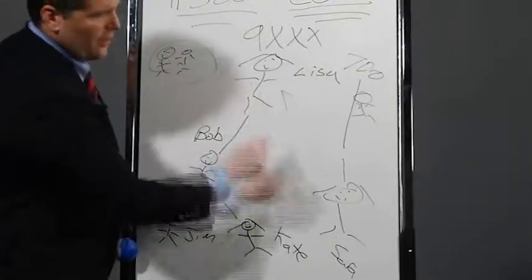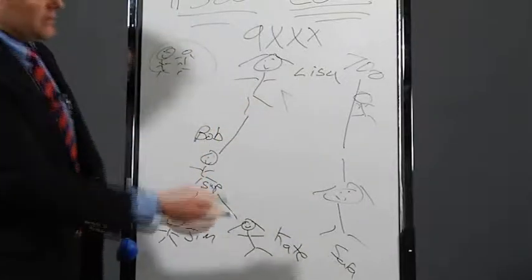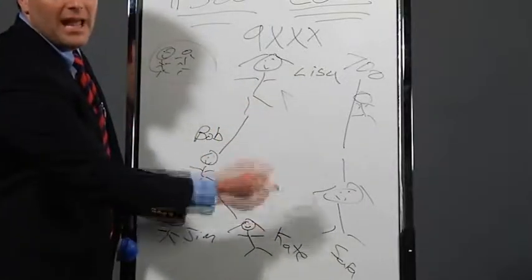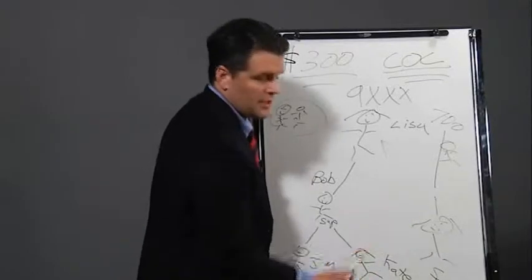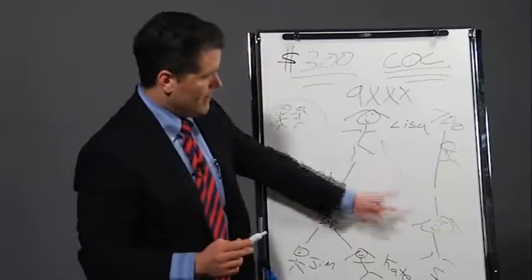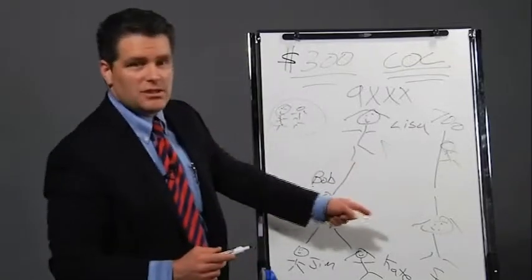Furthermore, Lisa can also give Sarah a gift because Sarah, one, makes less money than her, and two, is not in her chain of command. She looks down, she's not there. So they can exchange gifts.